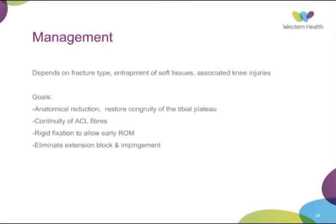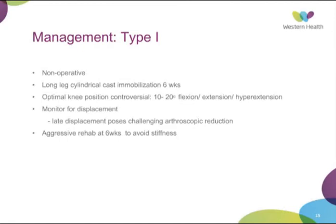Type 1 injuries are non-displaced and managed non-operatively, generally in a long-leg cylindrical cast. Immobilisation is typically six weeks, though some authors describe two to six weeks. There is controversy regarding position — most recommend 10 to 20 degrees of flexion, though some advocate incomplete extension or even hyperextension to bring the condyle down and hold the fracture reduced. It's important to monitor for displacement with two-weekly x-ray reviews, as late displacement can make arthroscopic reduction difficult and may require open surgery. At six weeks, an aggressive rehab protocol similar to an ACL protocol is started to avoid stiffness.